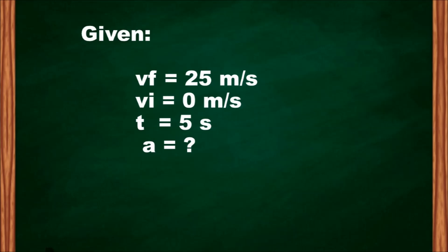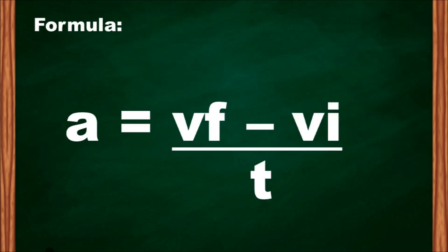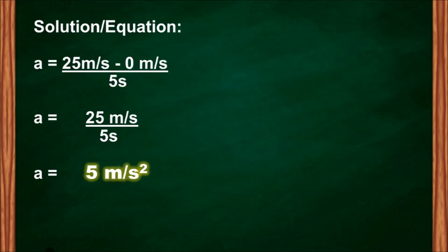We will use the formula: acceleration equals final velocity minus initial velocity over time. Solution: 25 m/s − 0 m/s = 25 m/s, divided by 5 seconds, gives us 5 meters per second squared as our acceleration.